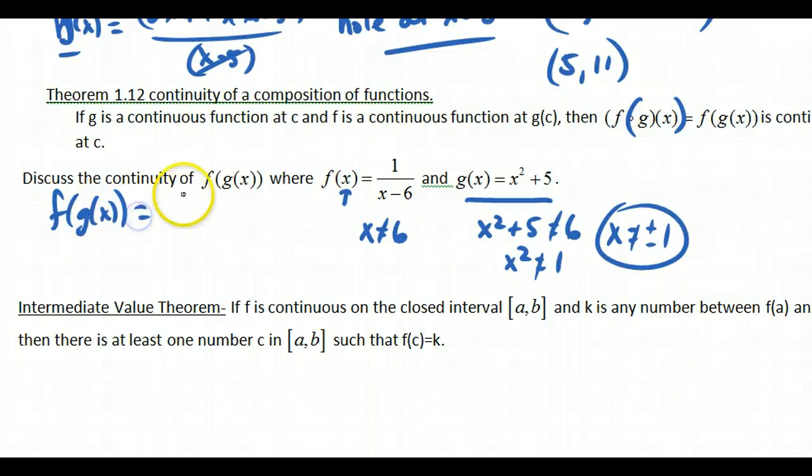this would be 1 over x squared plus 5 minus 6, which equals 1 over x squared minus 1.